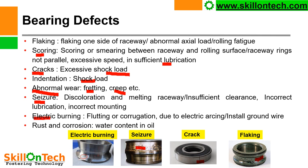Electric burning — this comes due to fluting or corrugation, due to electric arcing. Installing a ground wire may help prevent electric burning. Rust and corrosion in the bearing is a very common phenomenon and may be due to water content in the oil. So these are some important bearing defects, the reasons have been explained, and accordingly a corrective action shall be taken to avoid them.